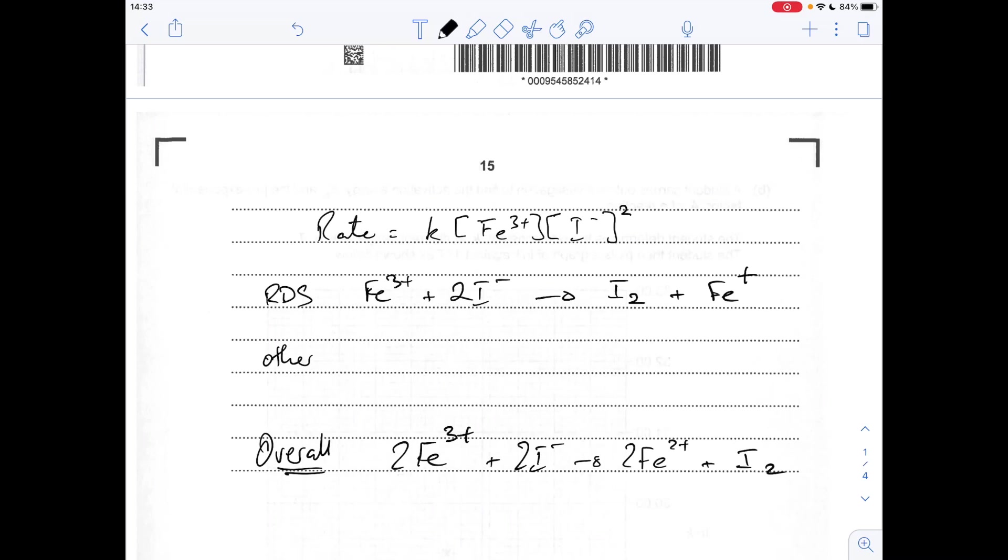So the next thing I need to do is get rid of that Fe+, because it's not actually in the overall equation. So if I make it a reactant of the other step, it's going to cancel when I add them together. You can see that we've got the two I minuses we need, but we've only got one Fe3+ at the moment. So if I react the Fe+ with an Fe3+, that's going to give me two Fe3+ when I combine.